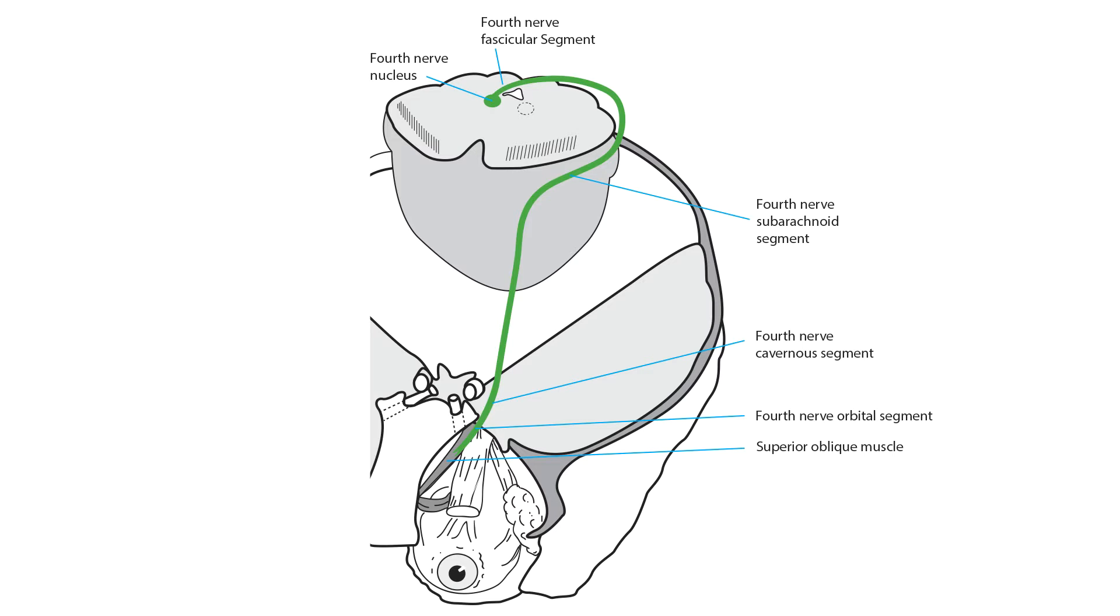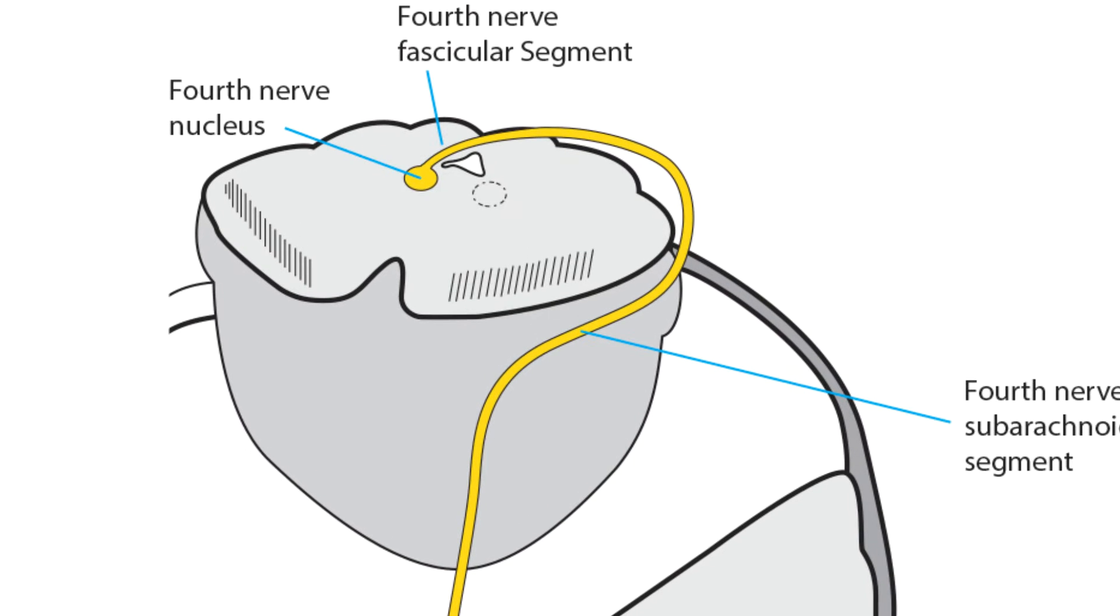The fourth cranial nerve has a long and complicated course. It starts as a nucleus that lies ventral to the sylvian aqueduct and inferior colliculus at the caudal end of the third nerve nucleus.